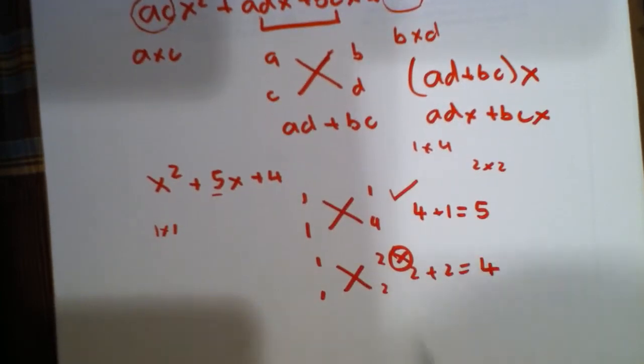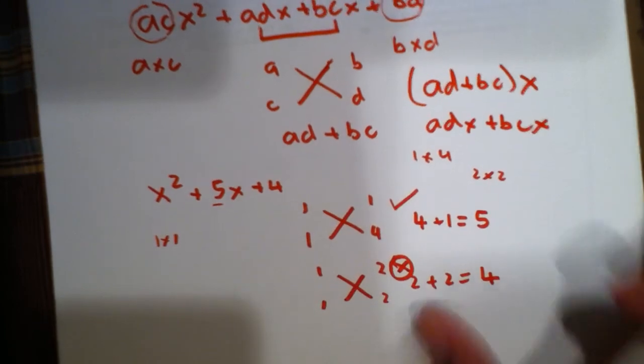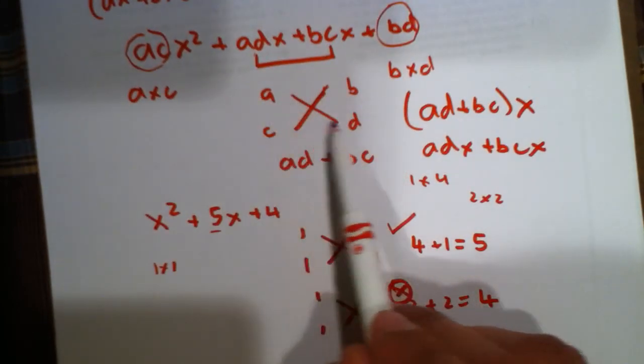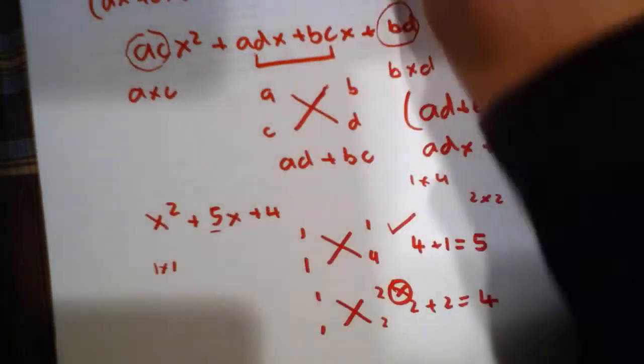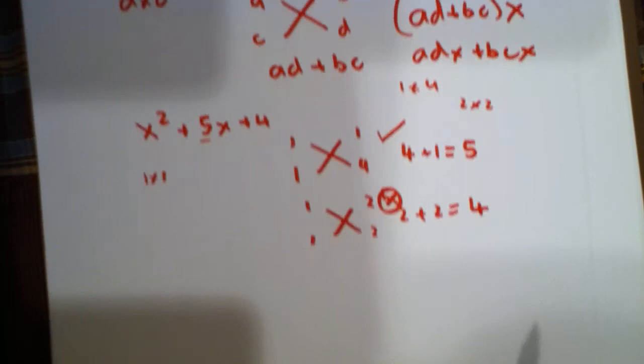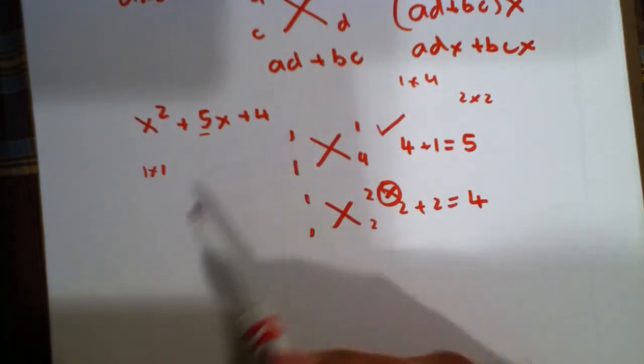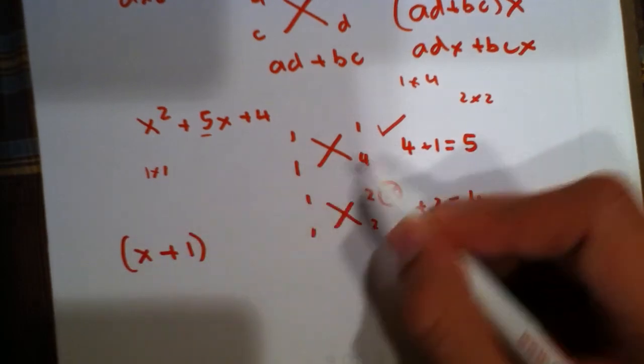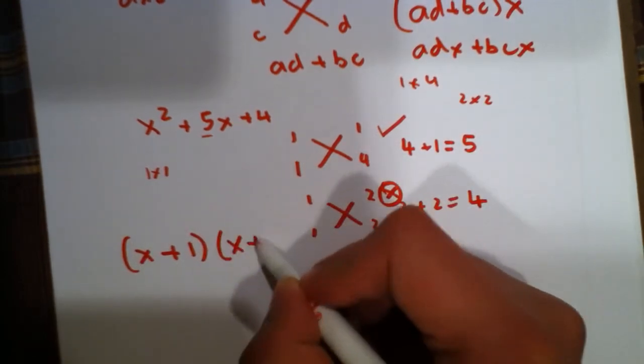So now, if we read across, like we had done up here, ax plus b and cx plus d, which is what we had over here, we can do the same down here. So, we can do x plus 1 times x plus 4.